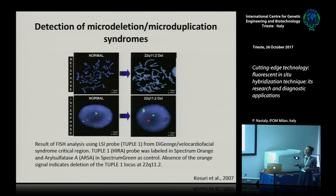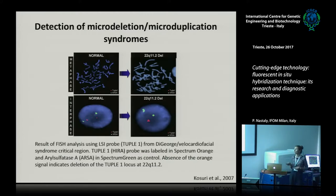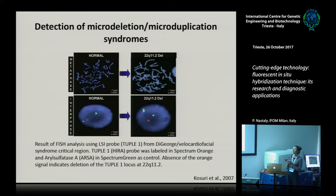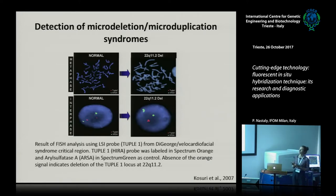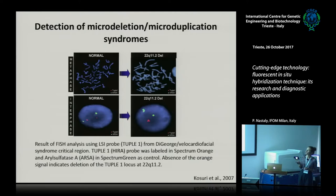FISH can also be used to detect microdeletion syndromes. For example, DiGeorge syndrome is associated with the loss of a locus on the long arm of chromosome 22. You can see a normal cell and a cell from a patient with DiGeorge syndrome, where the additional red dot from the chromosome 22q11 region is absent.